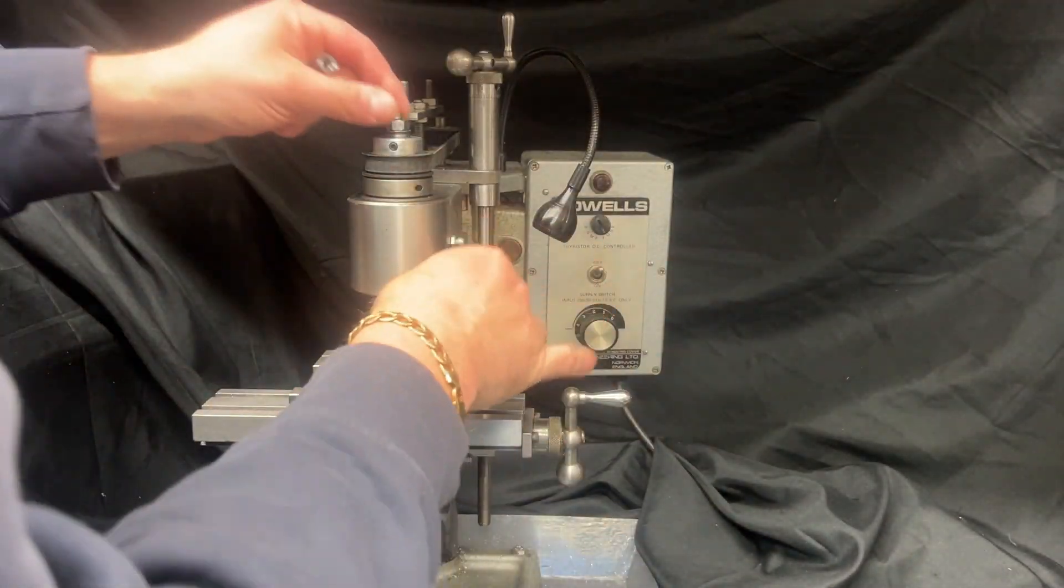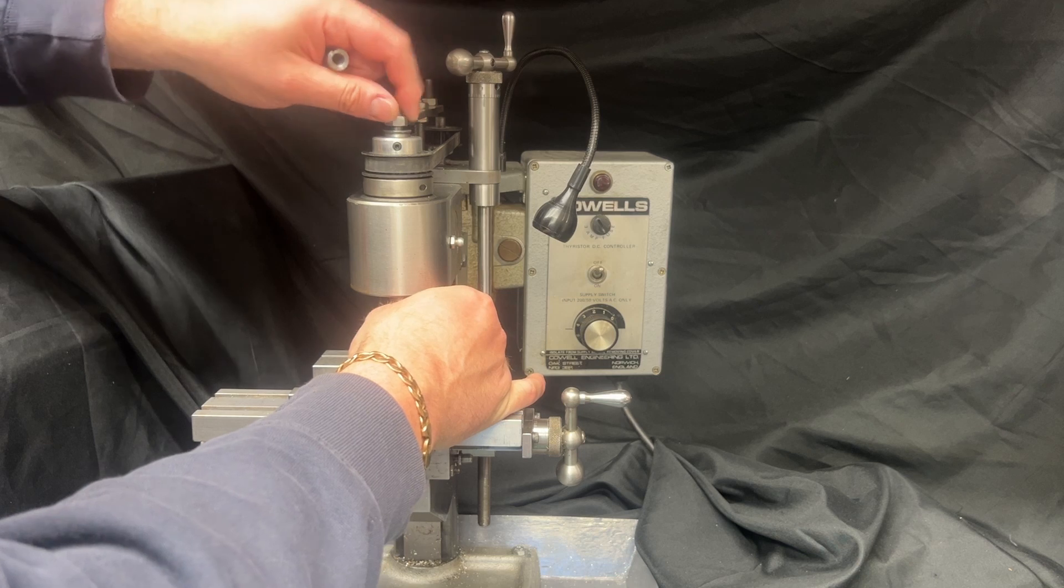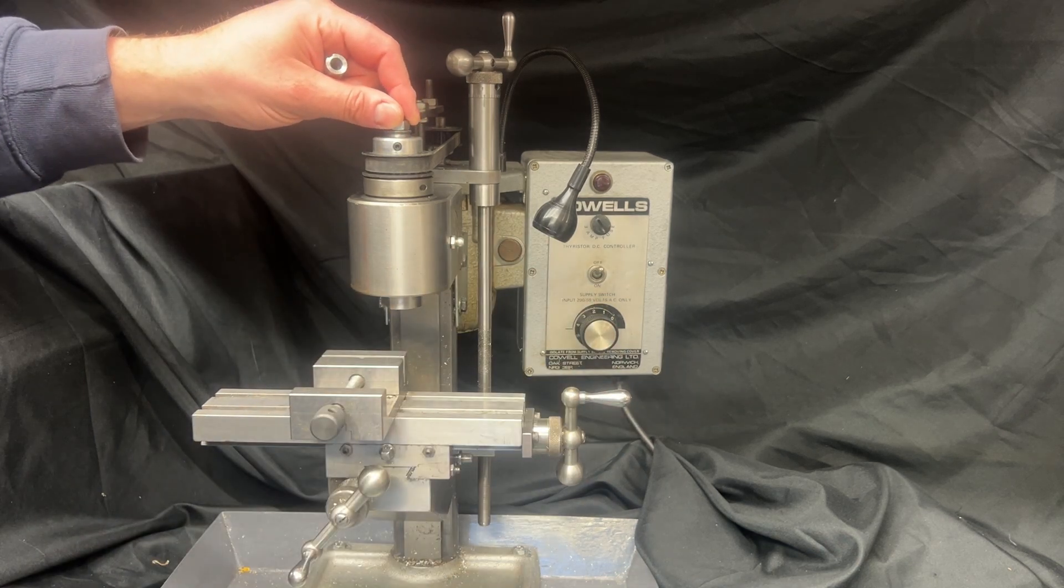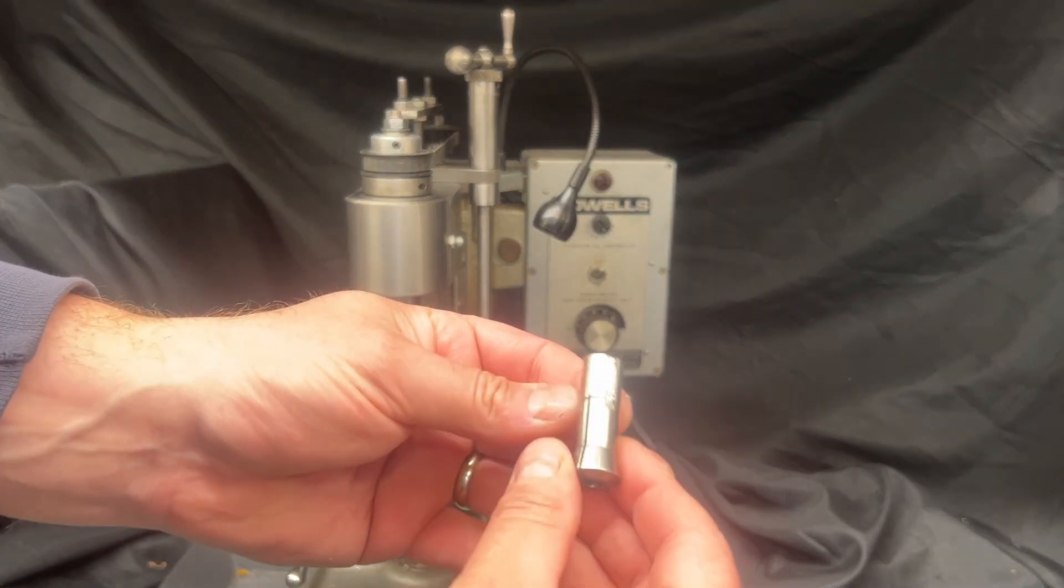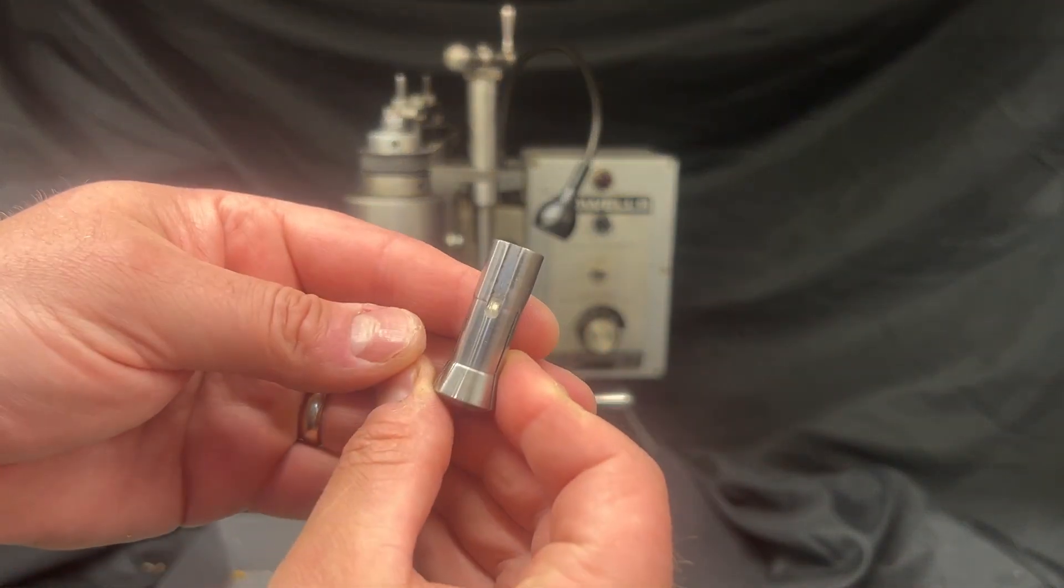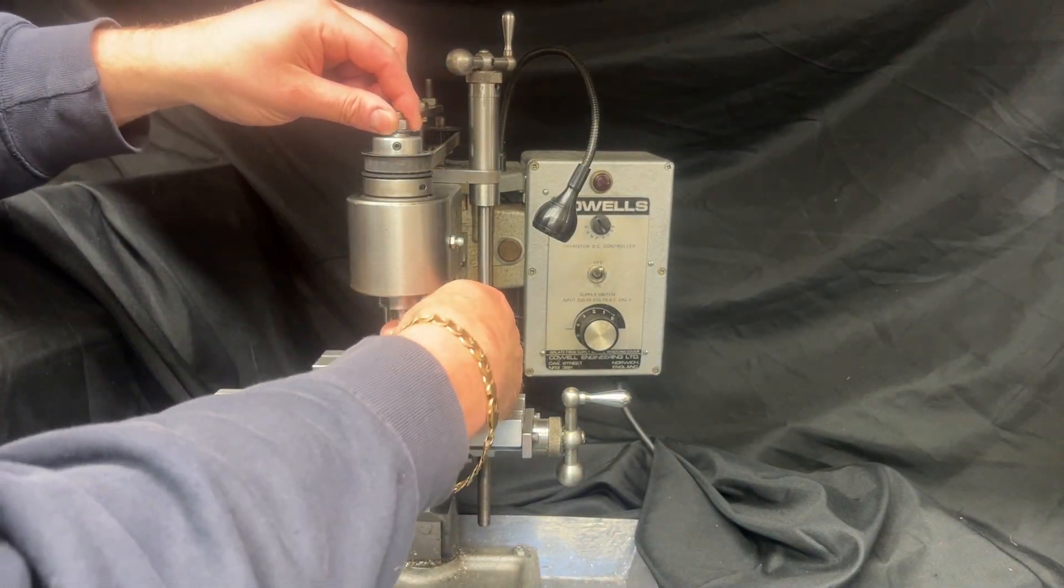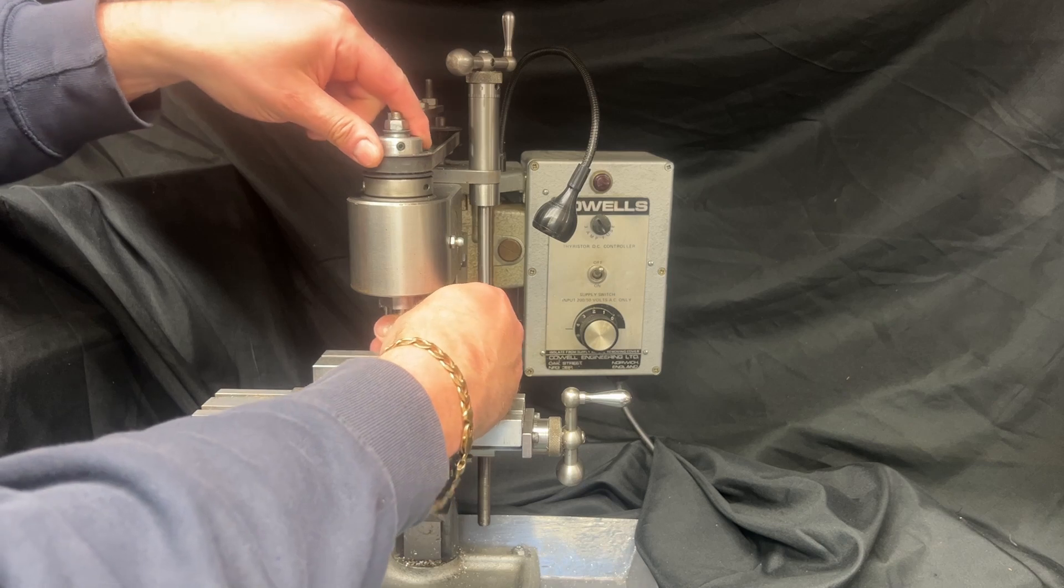So let's get into the machine. The first thing that strikes you about the Cowles Mill is the build quality. It's compact but incredibly solid. Everything's made from cast iron or precision made steel and finished to a really high standard. The spindle runs in high precision bearings and the whole setup feels incredibly tight and smooth.